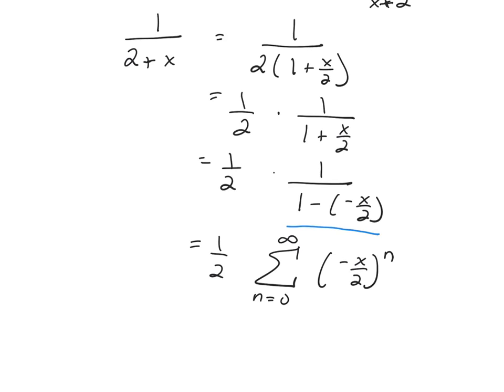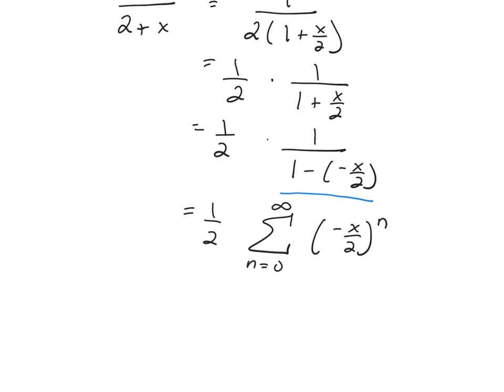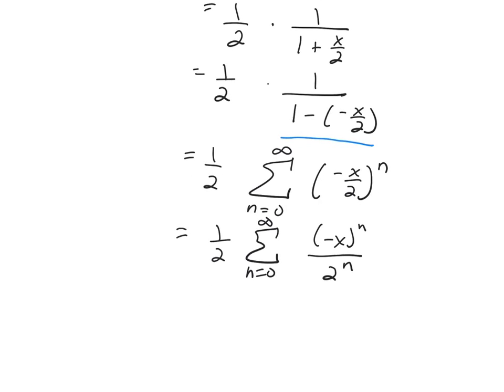Usually for power series, we want to have, for power series representations, I would like for everything to be on the inside of the sum. So I'm going to simplify what's inside of the sum. I'm going to use my rules for exponents. And write this as negative x to the n over 2 to the n. And then I can combine, once I pull the 1 half, this is just a constant, so I can pull it inside. And I can combine these two together.